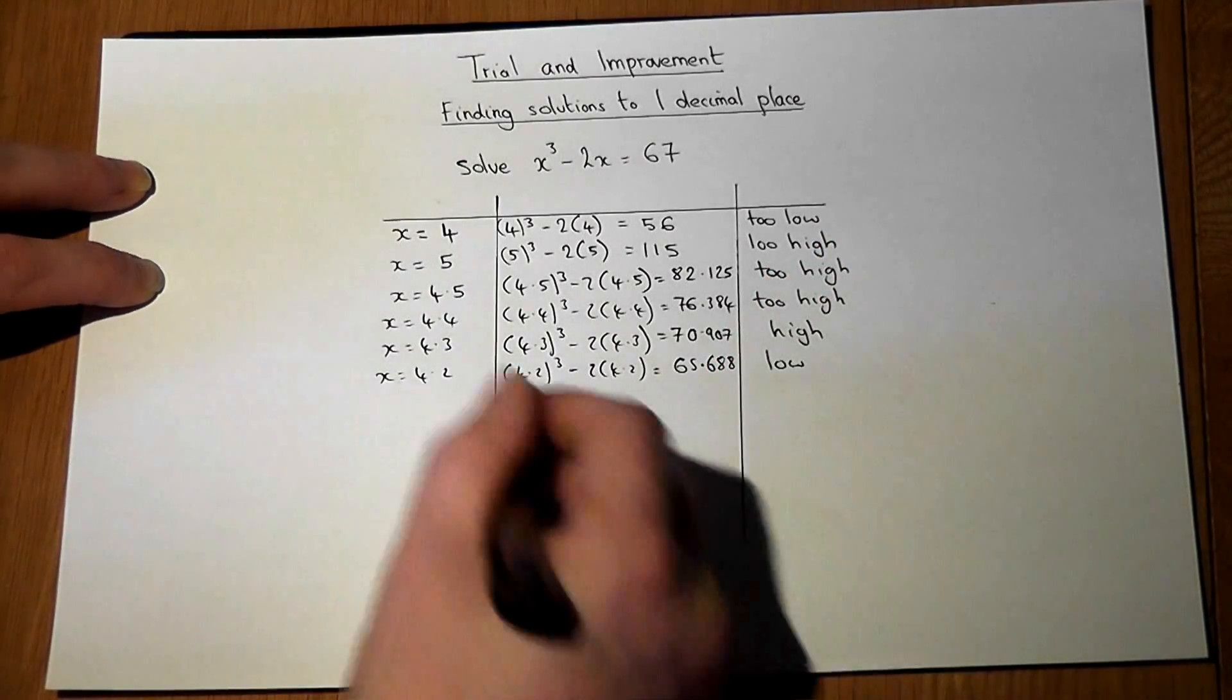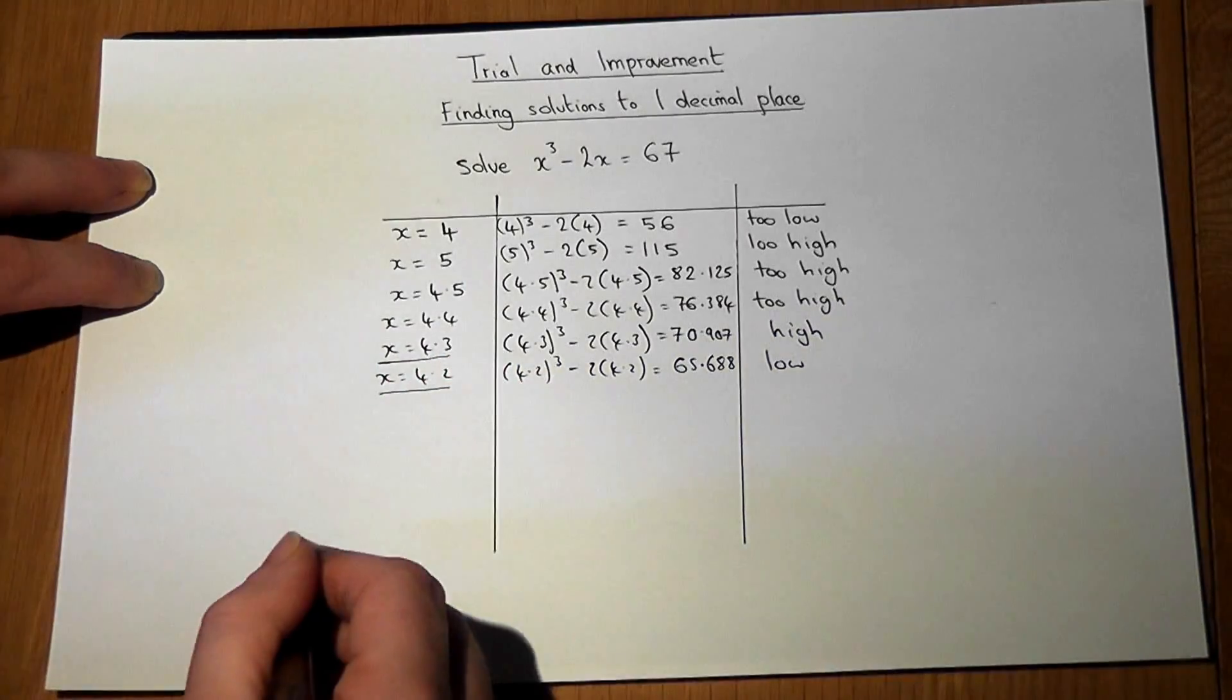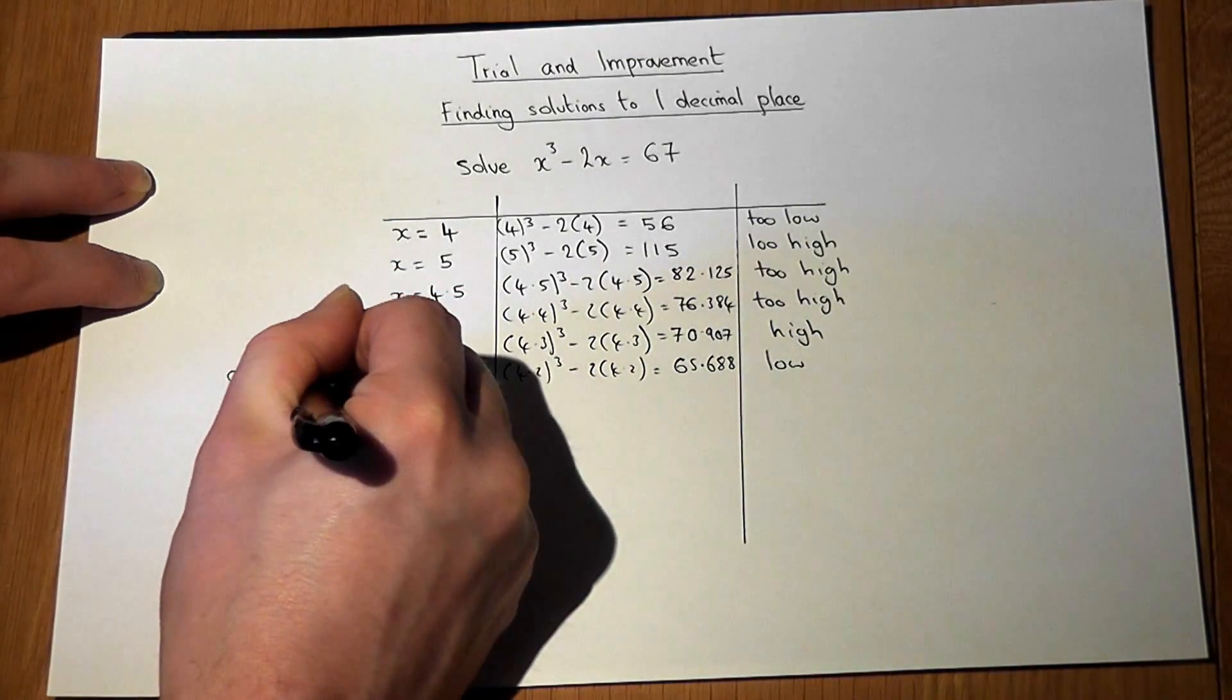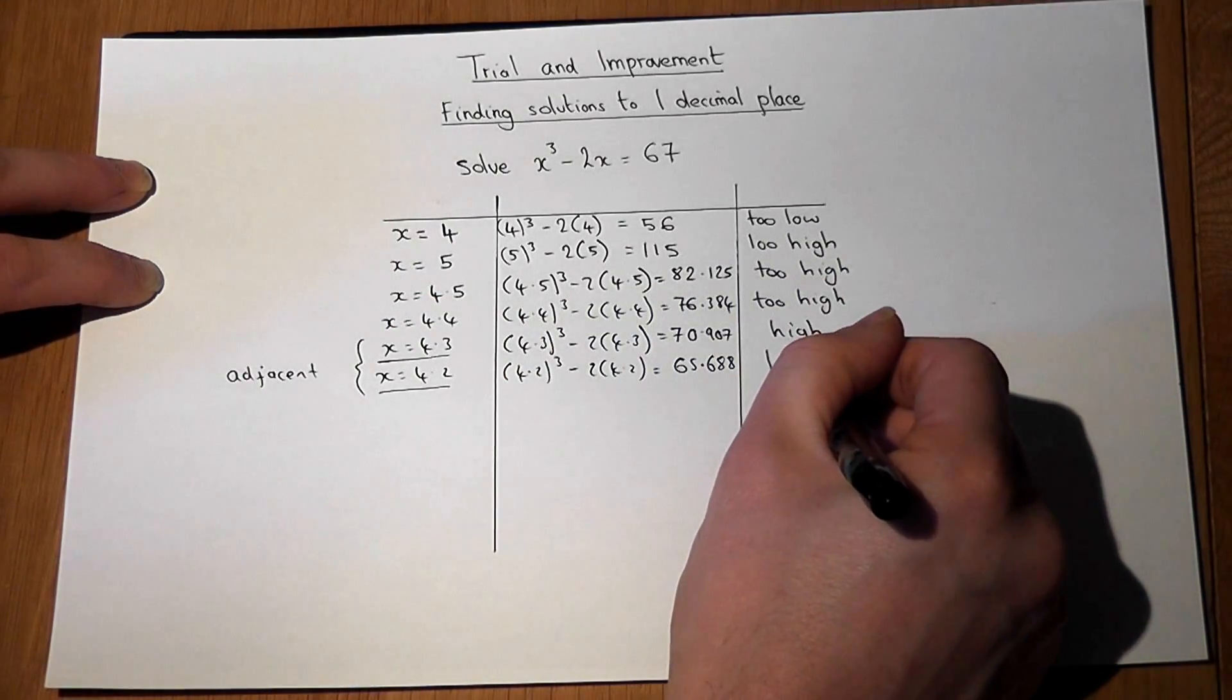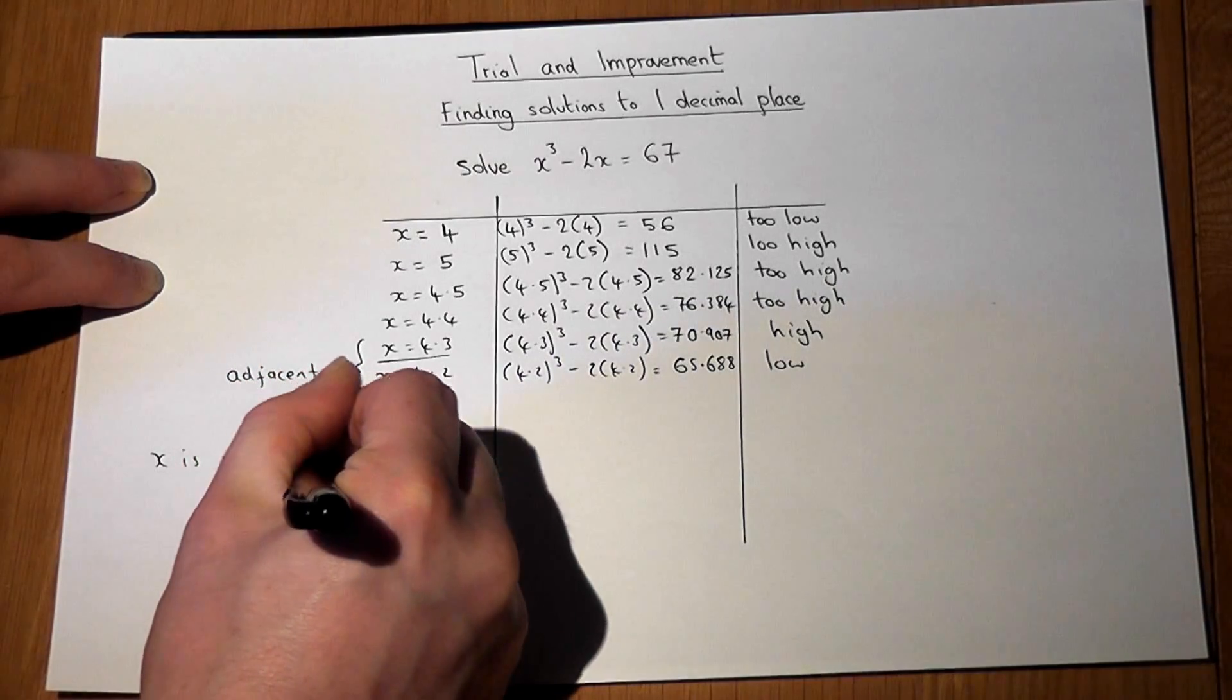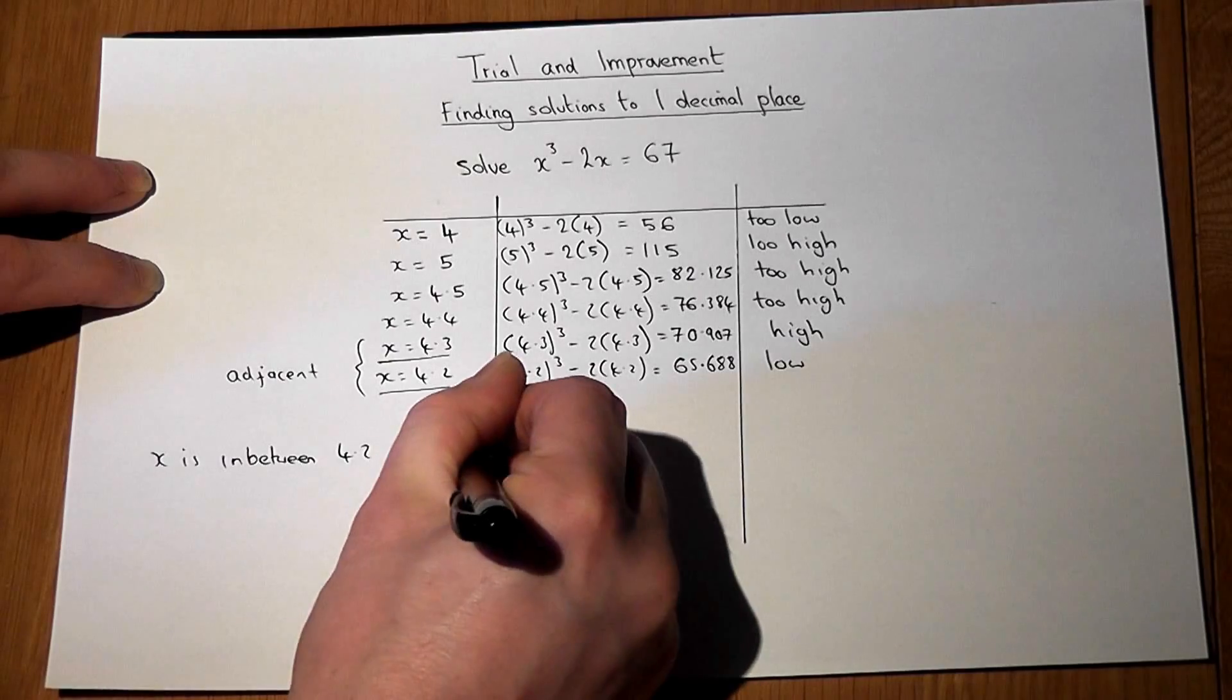So now we stop. We have looked at two adjacent values to 1 decimal place and found that one is too high and one is too low. So x is in between 4.2 and 4.3.